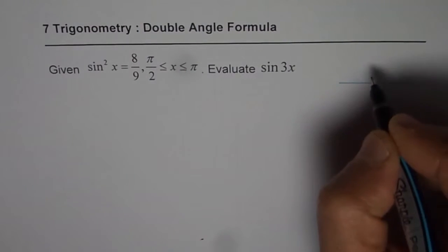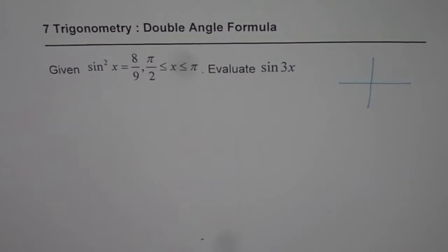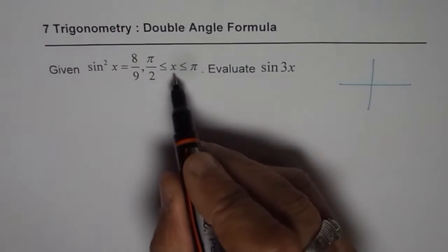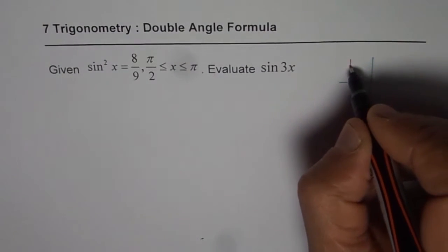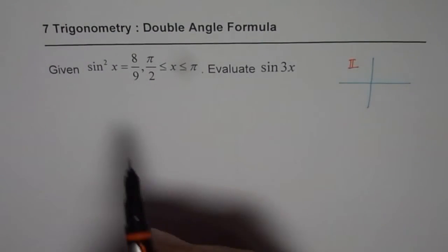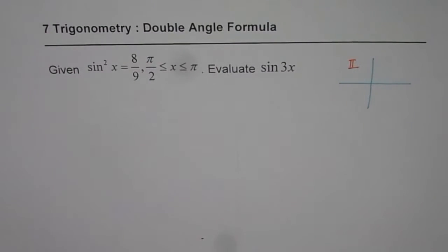So what we are given here is that the value of x is in quadrant 2. Sin²x is 8/9.